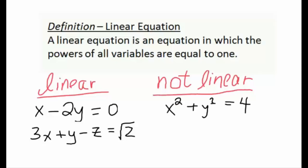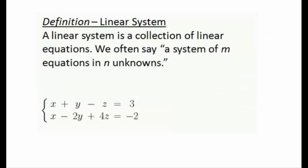Here's an example of an equation that's not linear: x squared plus y squared equals 4. This is a circle of radius 2, and the powers of x and y are not equal to 1, so this is not a linear equation. If we ever have a coupling of two variables like x times y, that's also not going to be a linear equation. Also watch for powers less than 1 — for example, z to the power of one-half would make an equation non-linear as well.